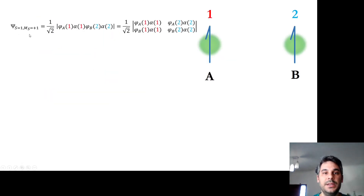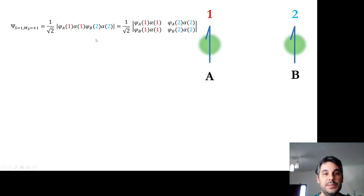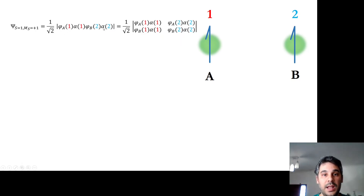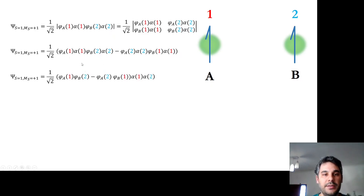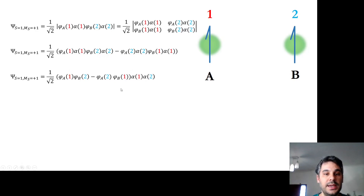Let's write the Slater determinant for a triplet state with ms equal to +1. This is achieved by having two electrons in different orbitals a and b, both pointing up — both having spin +1/2, or spin alpha. We write the Slater determinant as |phi_a·alpha, phi_b·alpha|. Expanding this determinant gives an algebraic expression containing spatial orbitals and spin variables, and we can factor out the spin functions alpha(1) and alpha(2) outside of the bracket.